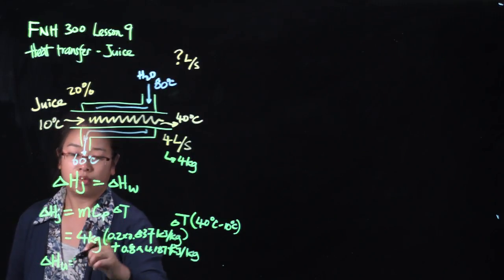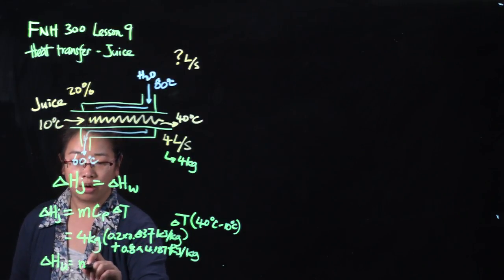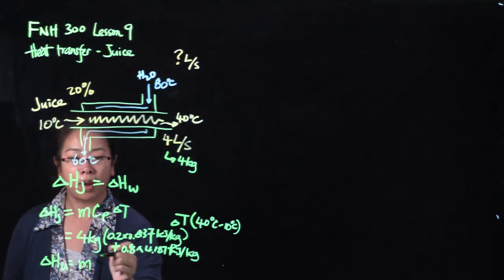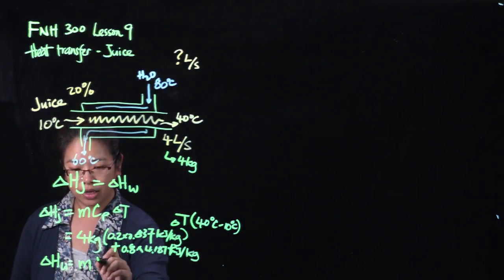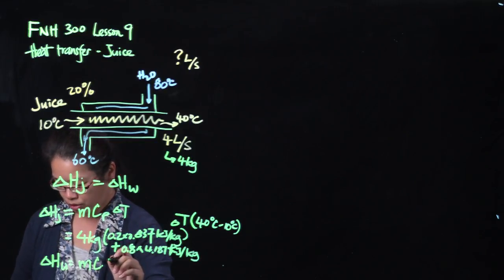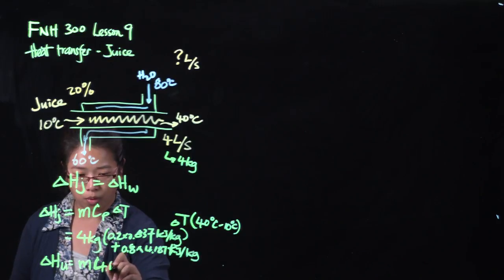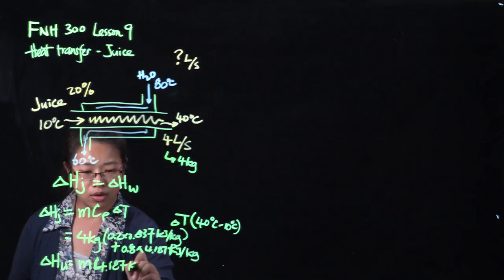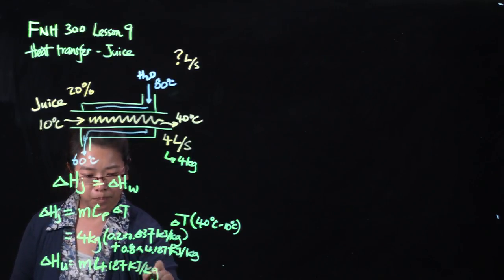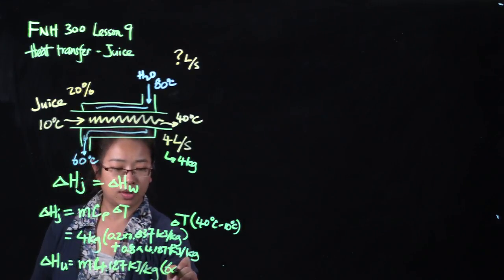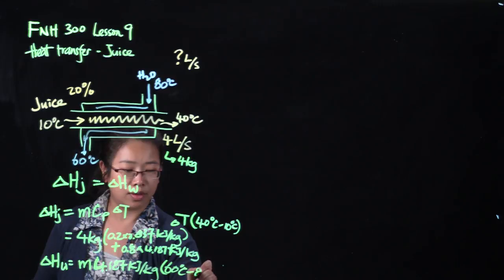We don't know the mass because that's something that we are looking for. That's the question. We are looking for how much water we need to pump through the system. Heat capacity is simple. It's something that we've used many times now, 4.187 kilojoules per kilogram. And delta temperature is going to be 60 degrees minus 80 degrees.